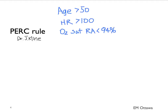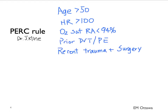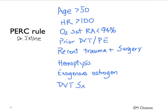The PERC rule only applies if the patient meets none of the criteria. They include: age, tachycardia, hypoxia at any point, prior DVT or PE, recent trauma or surgery, hemoptysis, exogenous estrogen use, and clinical signs suggestive of a DVT. If the patient has none of these criteria and your clinical suspicion is that the patient has a low probability of PE, then you can stop your PE workup at this point.